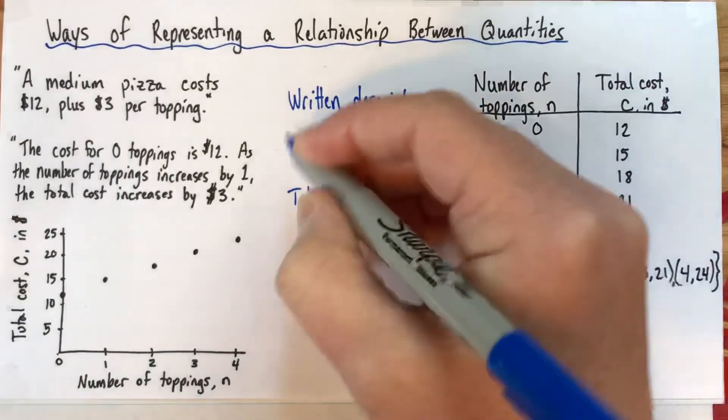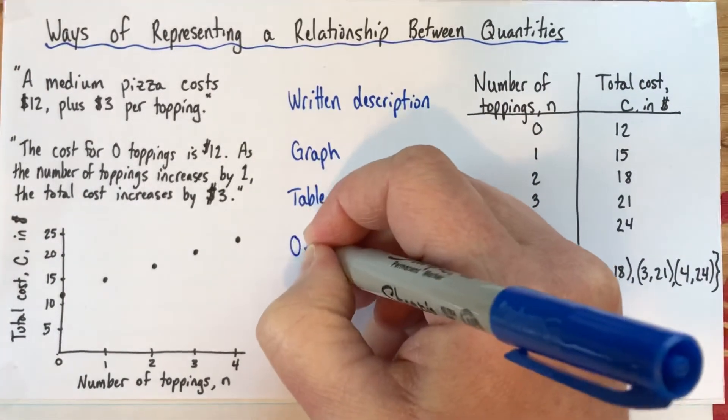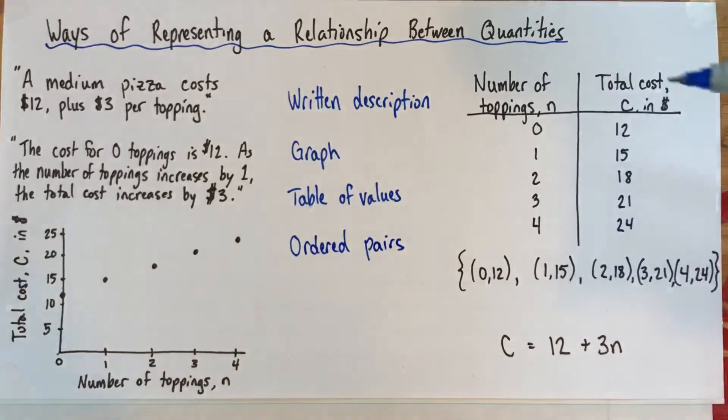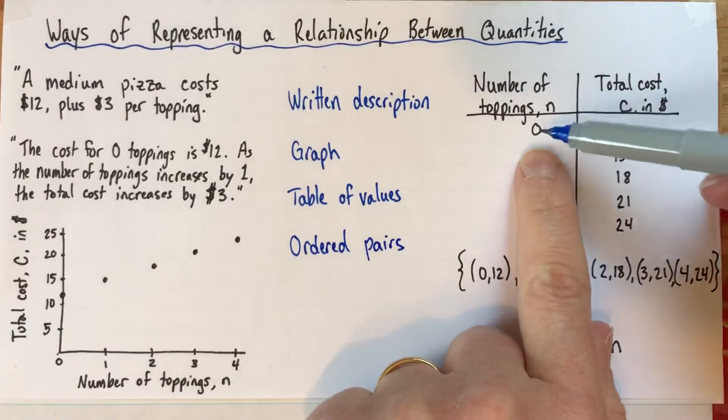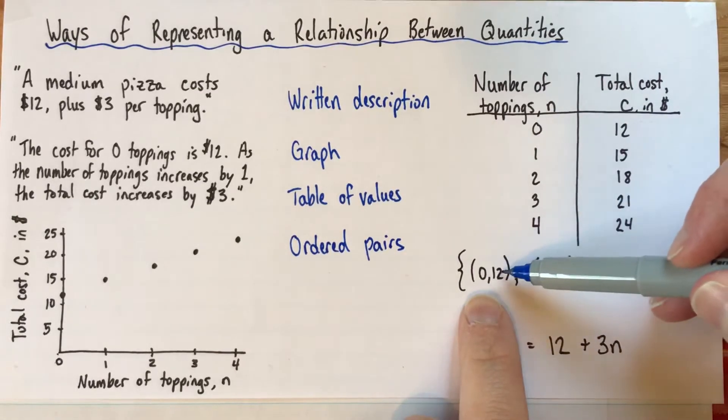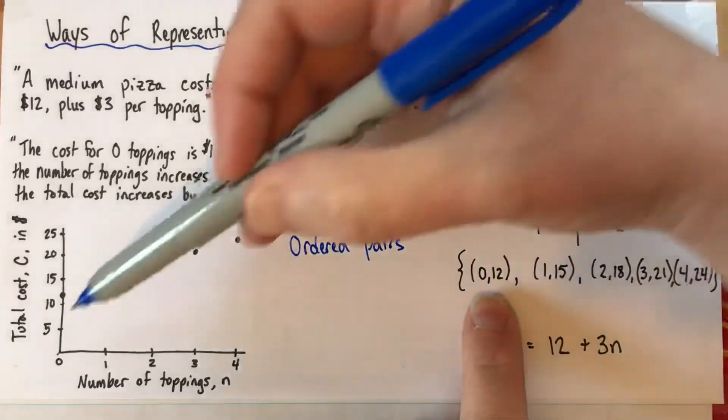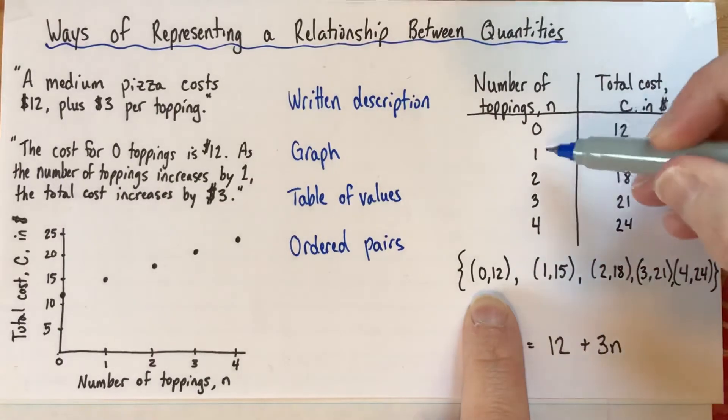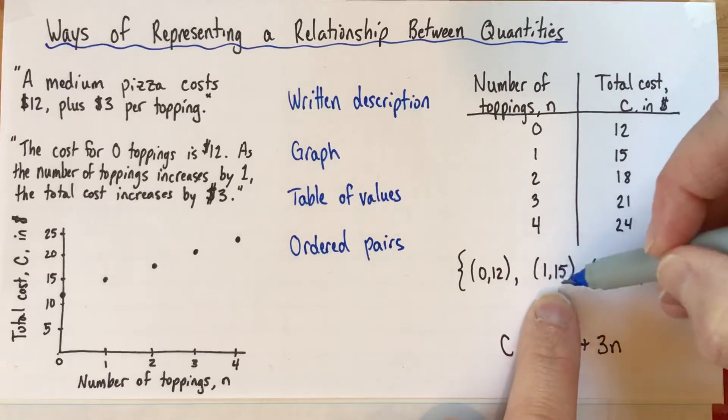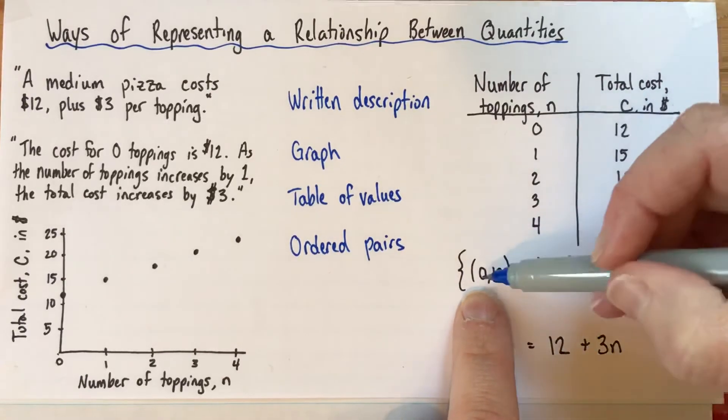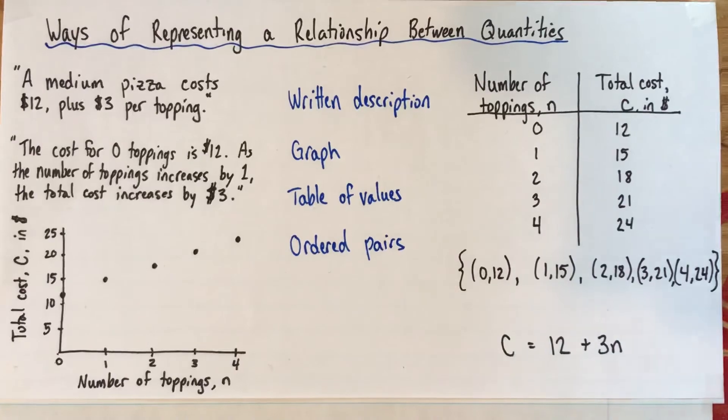This right here, these are called ordered pairs. Now, so what it is, is here we have the first value in the table was zero toppings, $12. And that's what this is, zero toppings, $12. These are also the coordinates of the point over here. And each of these lines in the table corresponds to one ordered pair. So an ordered pair is two numbers, a pair, and it's ordered, it's really important that they be in the correct order.